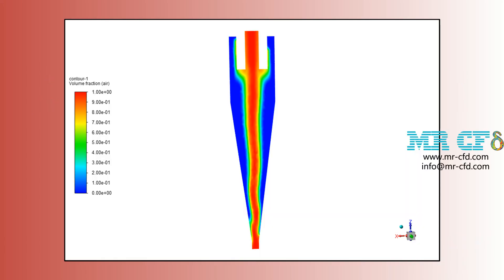Now, in this slide, you can see the contours of volume fraction of air, and you can compare this contour with the contour presented in the paper. It should also be noted that just like the paper, there is an air core in the middle section of our geometry.